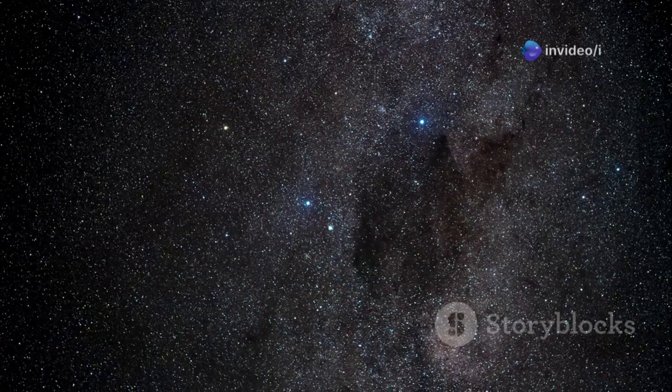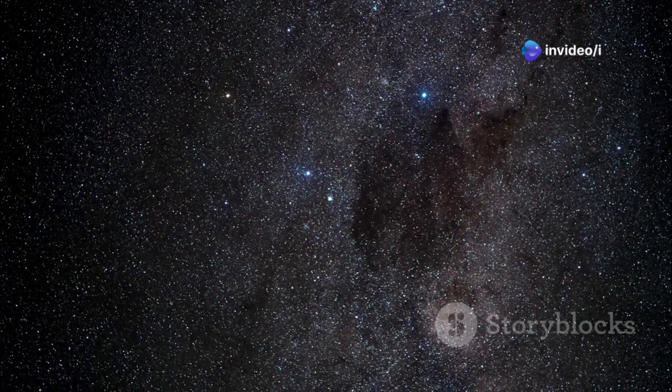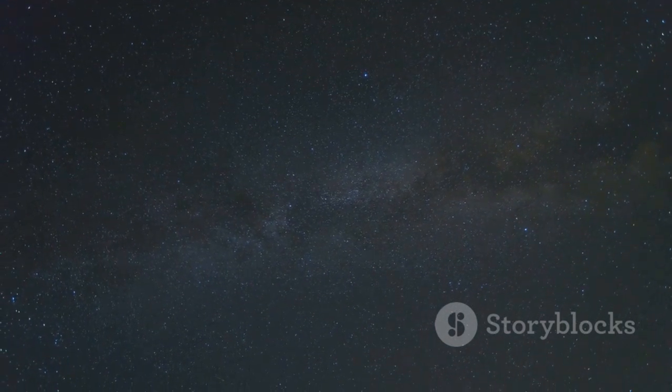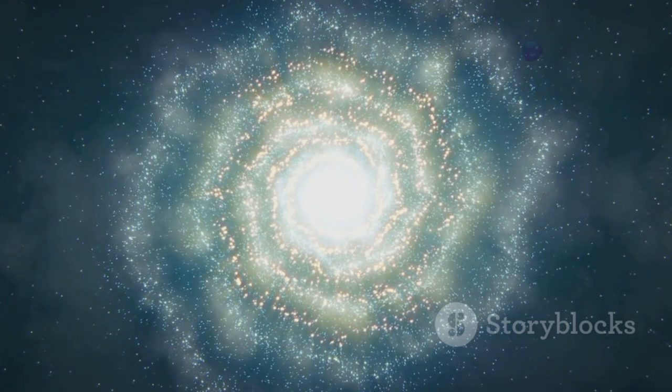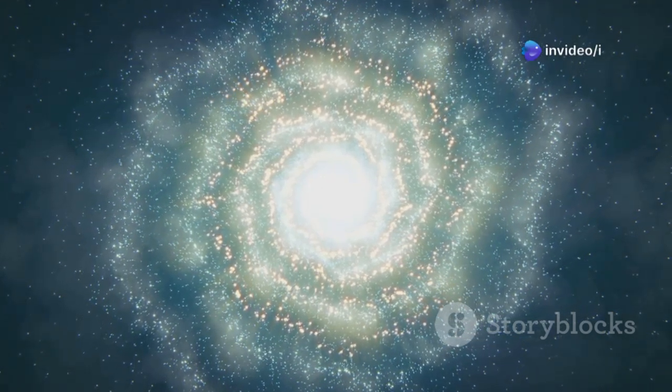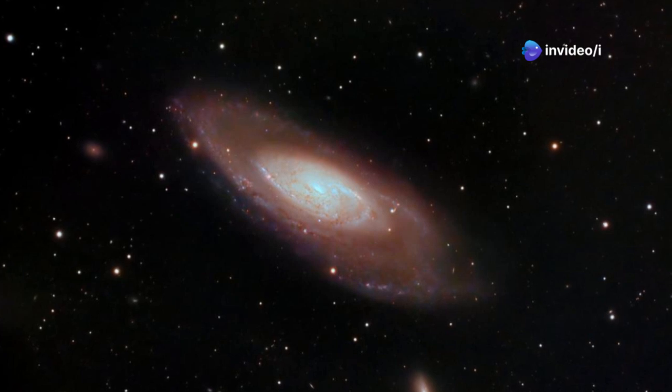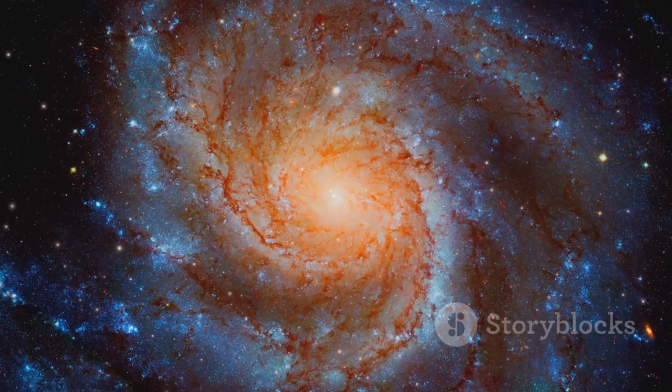Measuring the behemoth: Andromeda's true scale and structure. The visible disk of the galaxy stretches approximately 220,000 to 260,000 light years across. Our Milky Way by comparison is thought to be around 100,000 light years across. Andromeda is classified as a barred spiral galaxy, specifically type SBb. This means it has a central bar-shaped structure composed of stars from which its spiral arms emanate.